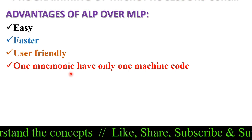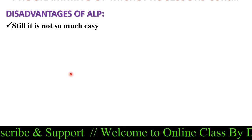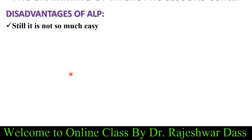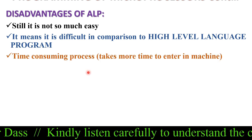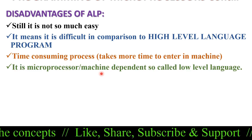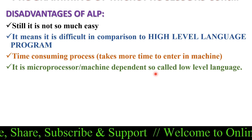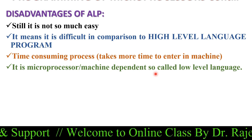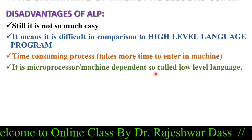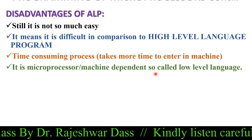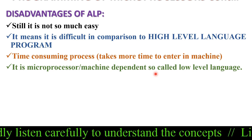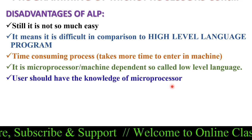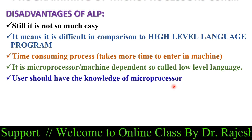Assembly language also has some disadvantages. It is not as easy as high level languages and is difficult in comparison to them. It is a time consuming process and it is microprocessor or machine dependent — so it is called a low level language. This means the language is machine dependent: instructions written for the 8085 microprocessor differ from those for the 8086, so the programmer must know the specific microprocessor they are programming for.